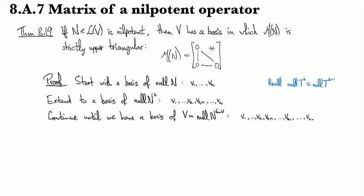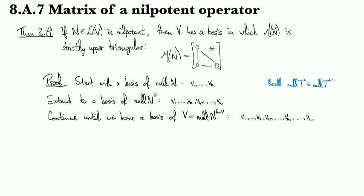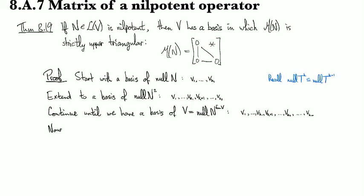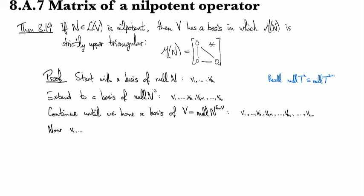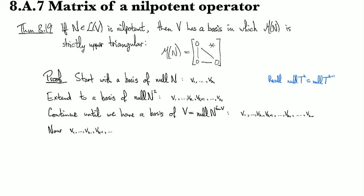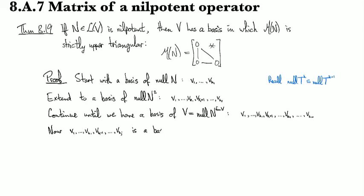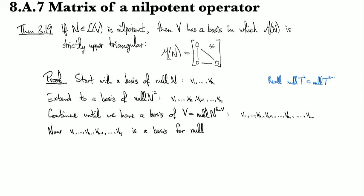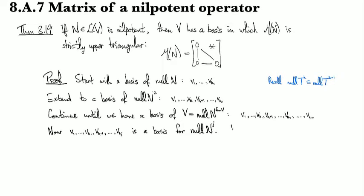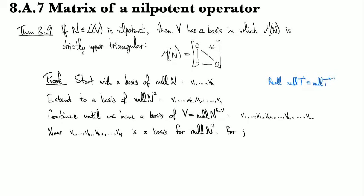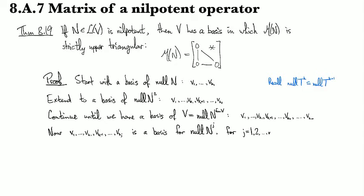So now this is a basis for the entire vector space. So if we stopped at some point, so if we had... If we went up to just VKJ, then this is a basis for the null space N to the J for some J less than or equal to the dimension of V. Yeah? Okay. So that holds for... And I guess I can say this is for J equals 1, 2, up to M.